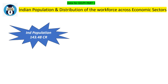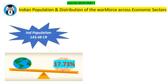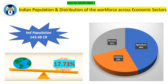The Indian population at present is 143.48 crore, which constitutes 17.73% of the world's total population. This is divided into three sectors — agriculture, industry, and services. Agriculture constitutes 44%, industry 25%, and services 31%.